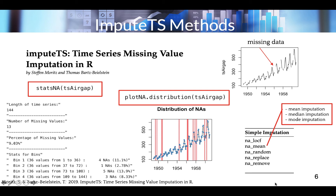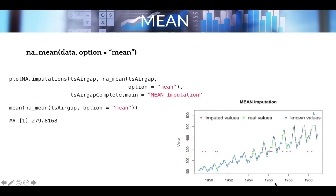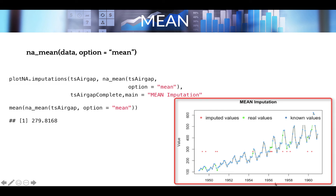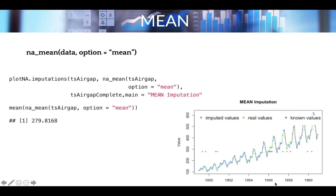First, we'll start with na.mean, which includes mean, median, and mode imputation. This function calculates the mean over all known non-NA values and replaces all NAs with this value. The option selected is 'mean', and na.mean has two parameters: the dataset and the option. Visual inspection is provided by the plotNA.imputations function. In the figure, the imputed values are marked in red, and they do not fit the ts_airgap dataset very well. Green marks real values from the complete dataset; blue marks known values. You can notice our data has a strong upward trend, and this plotting function allows us to quickly detect the problem with using the mean function.